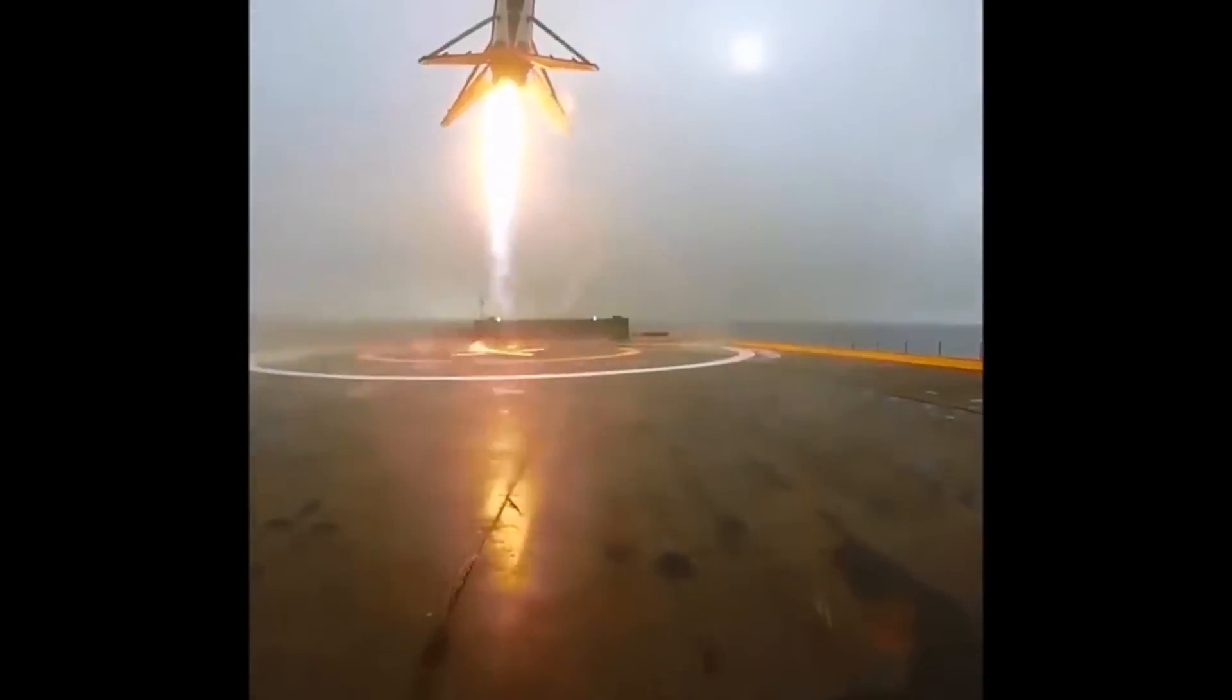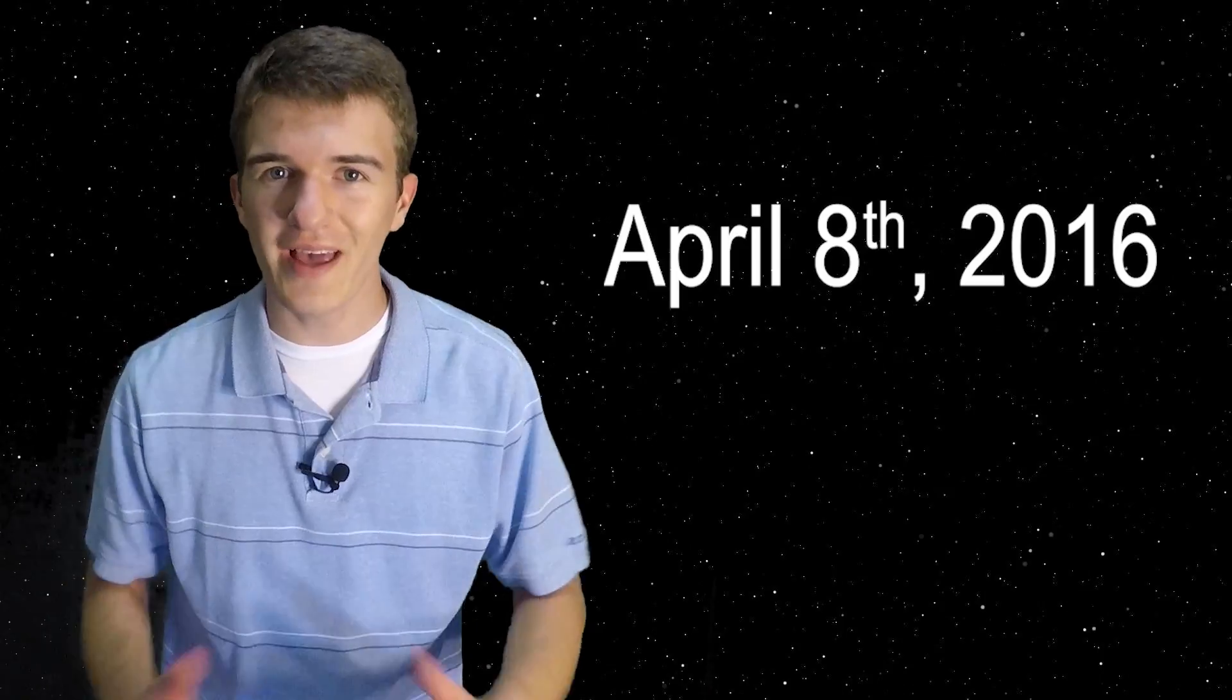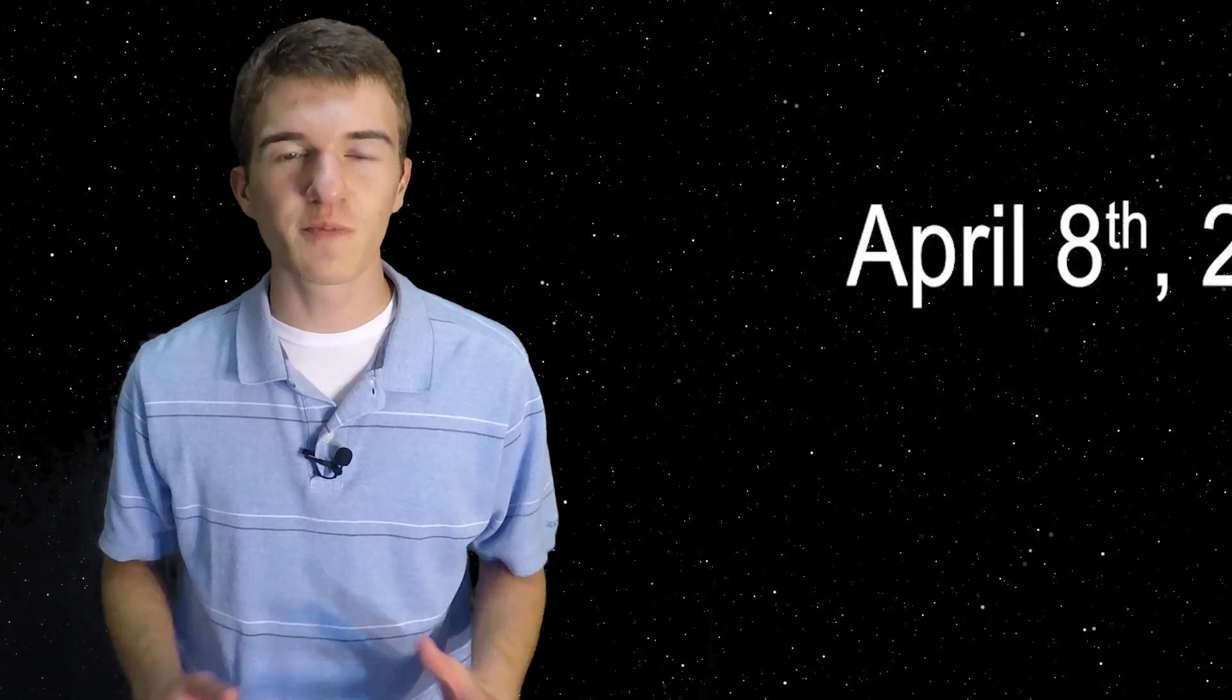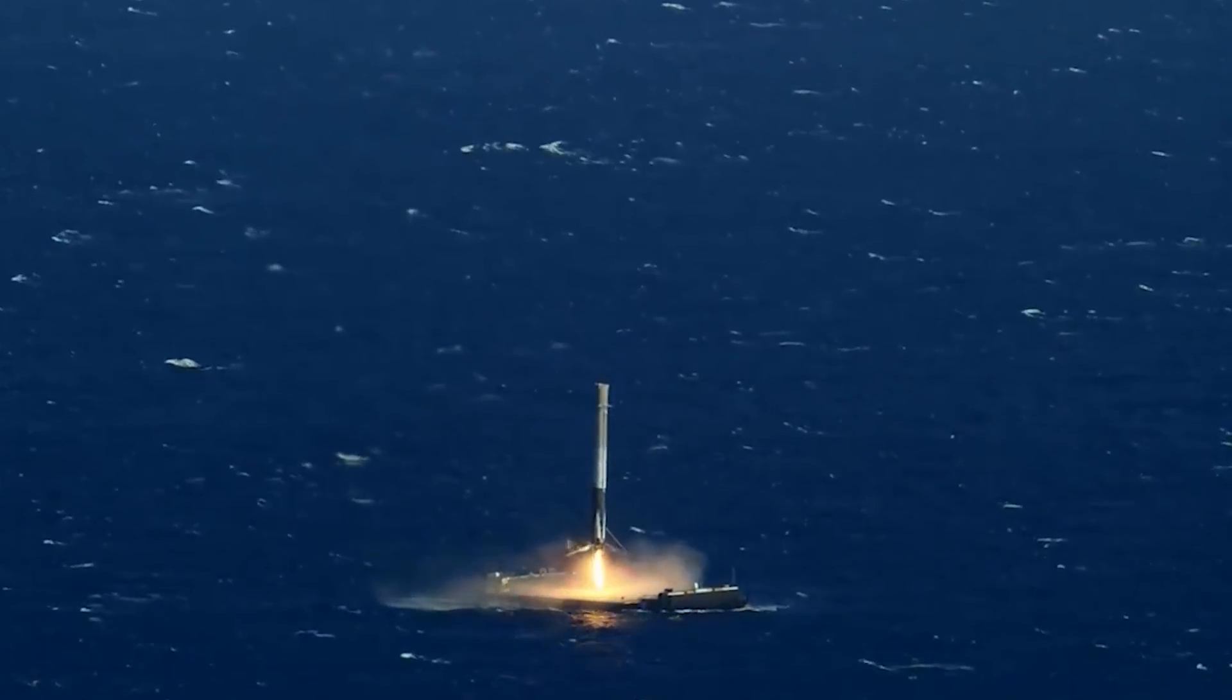Then, about a month later, they would attempt more landings of their Falcon 9, but instead on a drone ship at sea. In January, a launch from Vandenberg would land on the drone ship, but one of the legs locked out and it tipped over. And then later in March, they would try again launching a geostationary satellite, but it was inaccessible due to low fuel reserves and crashed into the barge. This then leads us to April 8th of 2016, where SpaceX is launching a cargo mission to the International Space Station for NASA, but it turns out this would also be the very first successful landing on a drone ship.